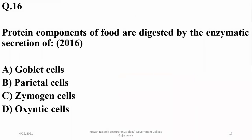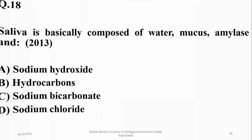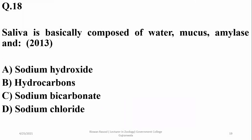Protein components of food are digested by the enzymatic secretion of zymogen or chief cells, which produce pepsinogen. The activation of trypsinogen to trypsin is a most frequently repeated question in past papers of UHS.